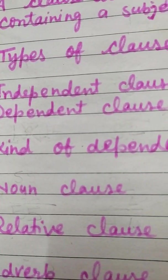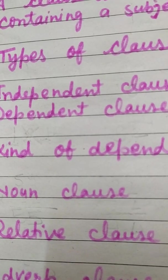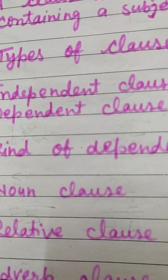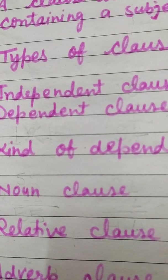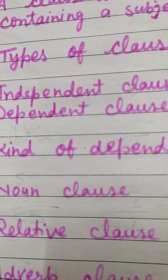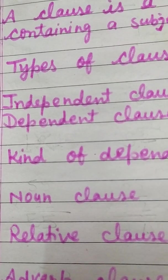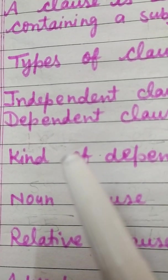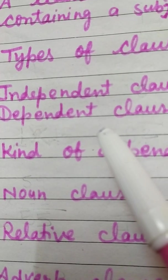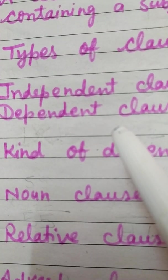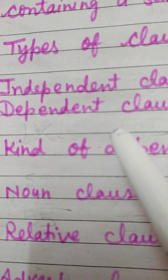Now, dependent clause. A dependent clause is a subordinate clause. It starts with subordinate words like when, which, or if. It cannot stand alone as a sentence and is labeled according to its function in the sentence. Dependent clauses are totally started with subordinate words.